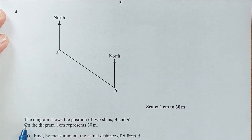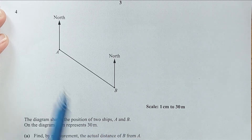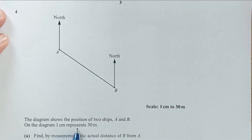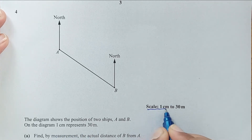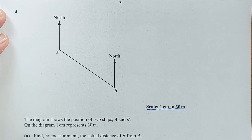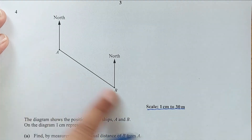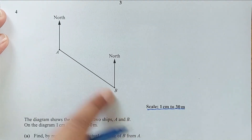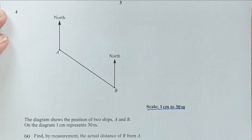Question number 4. The diagram shows the position of two ships A and B. On the diagram, 1 cm represents 30 m. The scale given is 1 cm equals 30 m. Part A: find by measurement the actual distance of B from A. Let me measure the actual distance using the ruler.